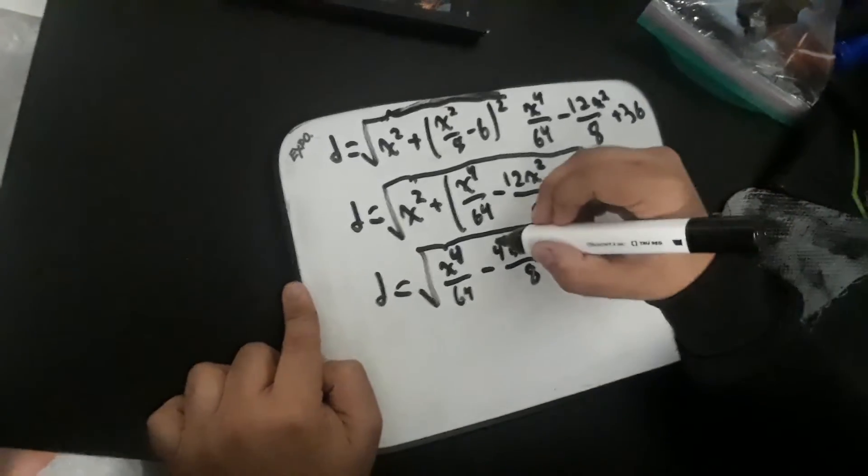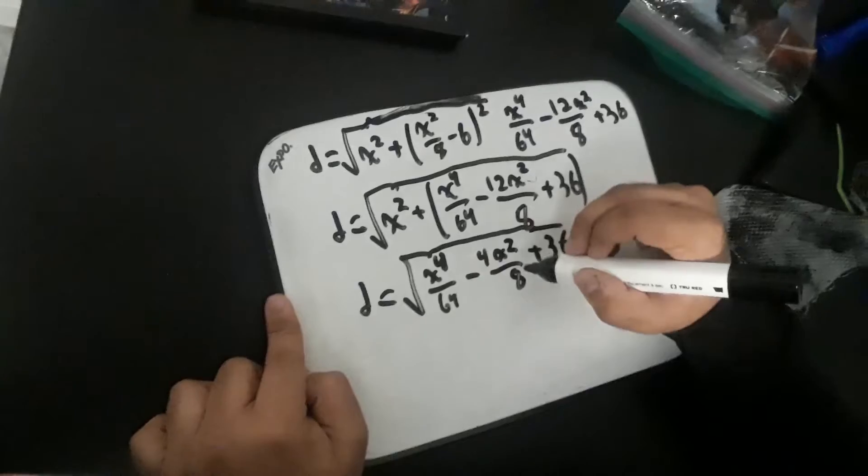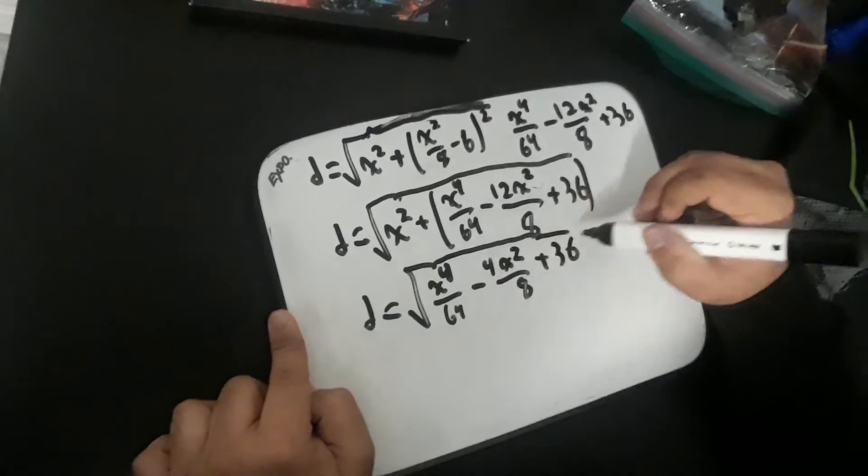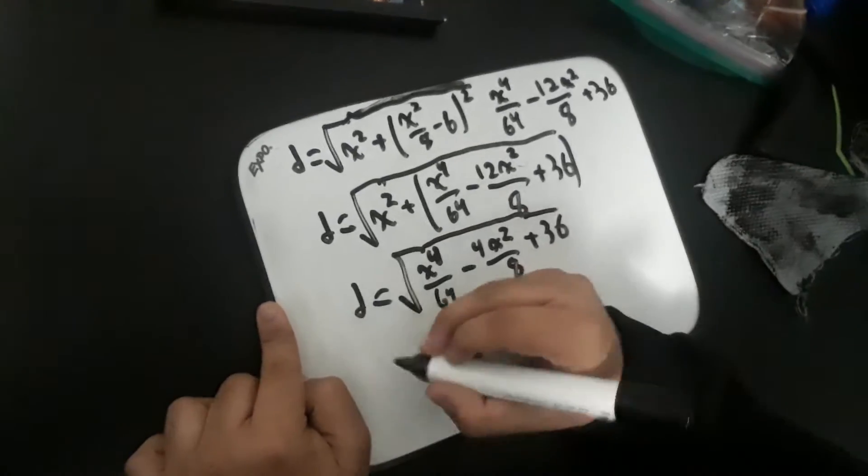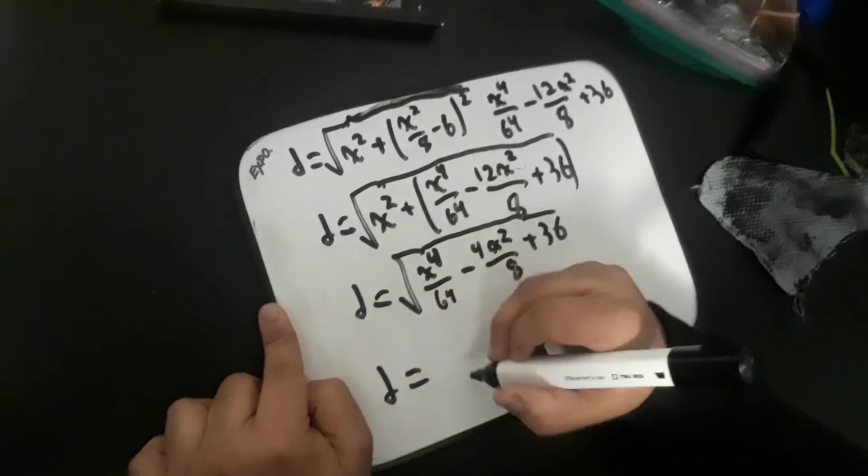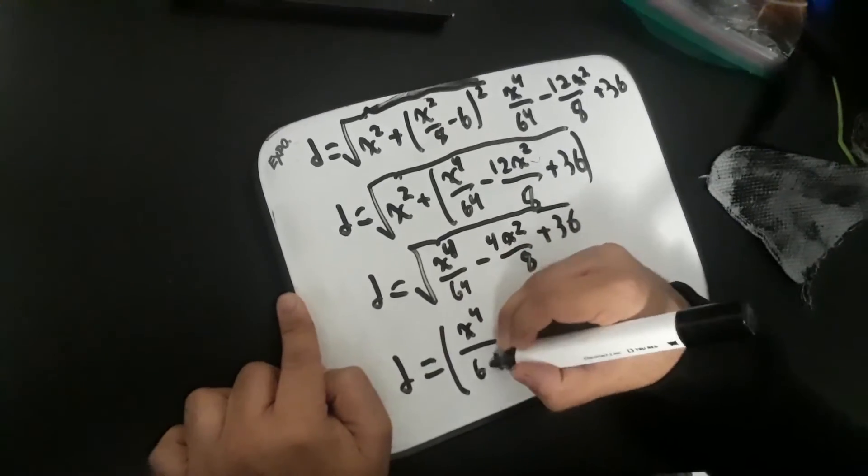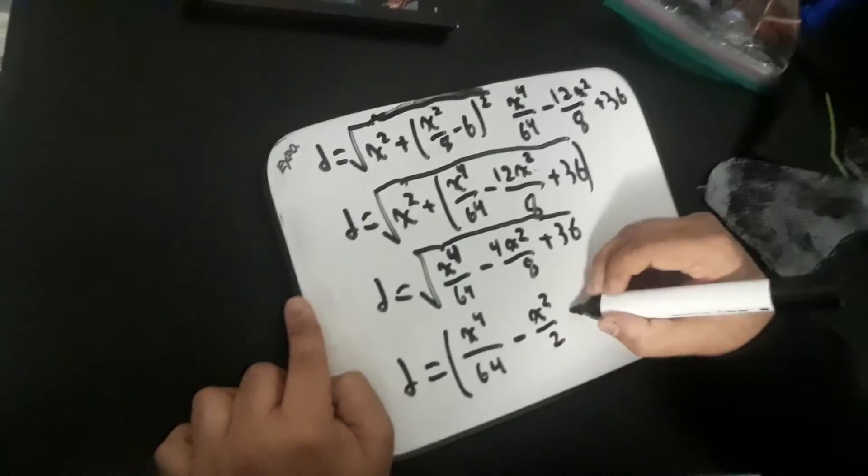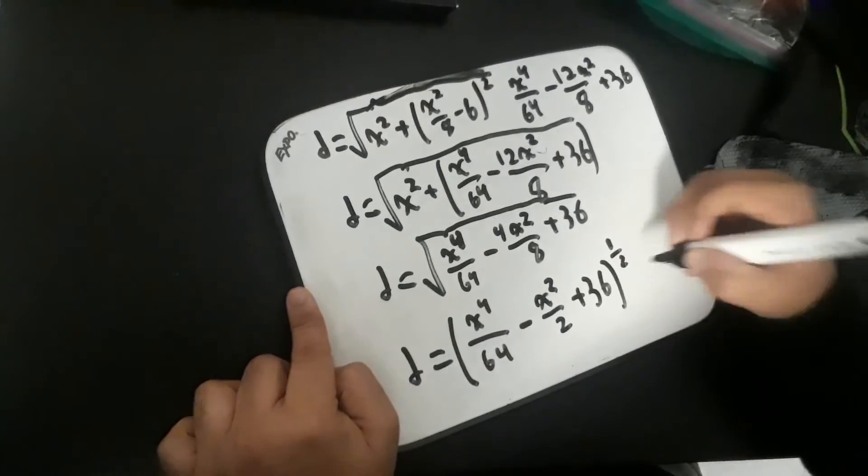Now in this function, the 4 and the 8, the 4 over 8 can be simplified into 1 over 2, which becomes x squared over 2. And this square root can be turned into an exponent of one half for the entire function. So we rewrite it as (x to the 4 over 64 minus x squared over 2 plus 36) to the power of 1/2.